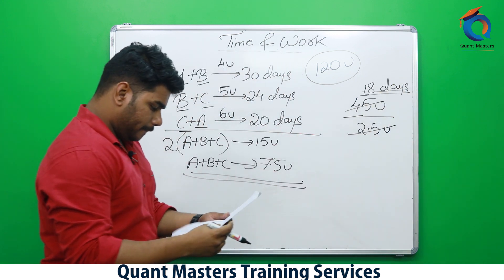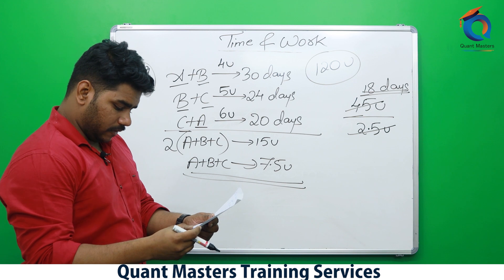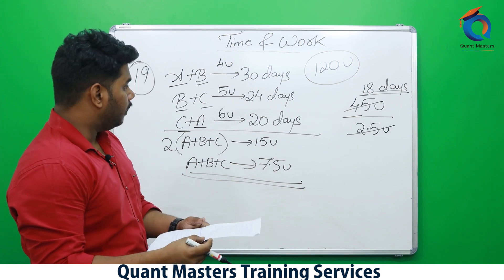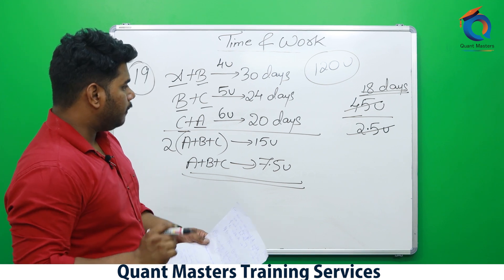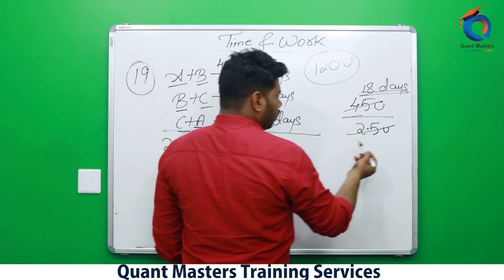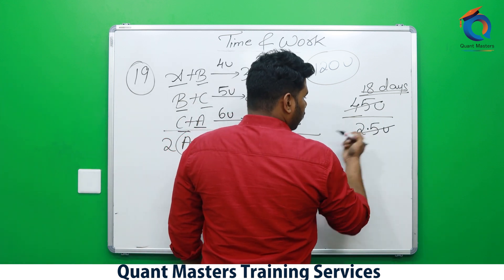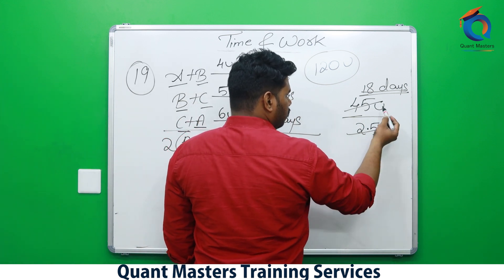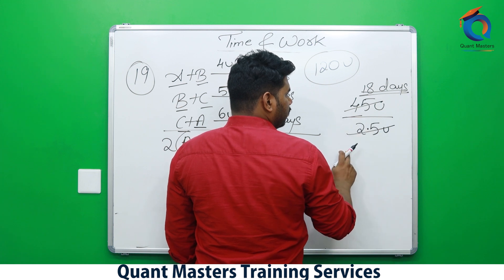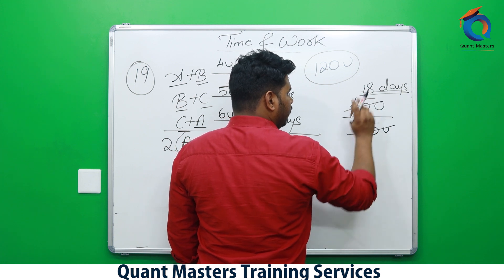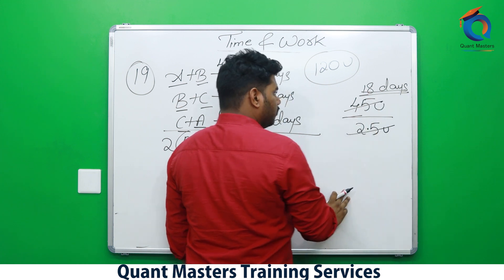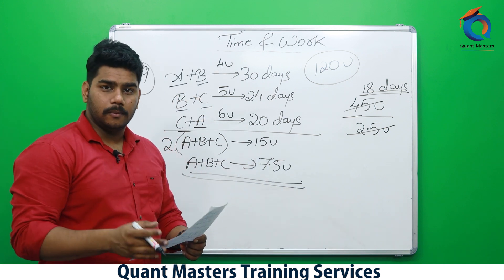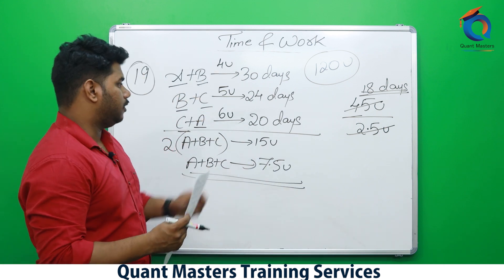Checking: does option D (none of the above) match 18 days? Verifying: 2.5 × 18 = 45 units. Correct. So the answer is option D — none of the above, which is 18 days. Please write it all down.